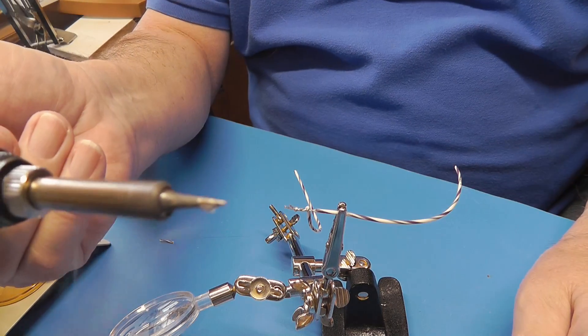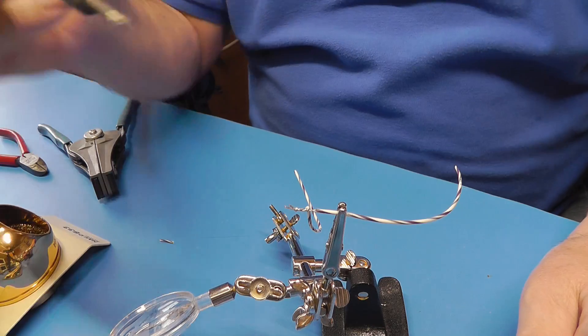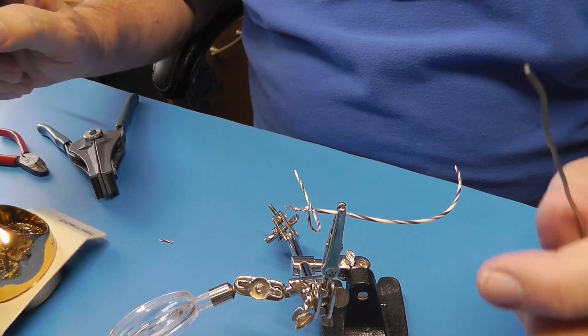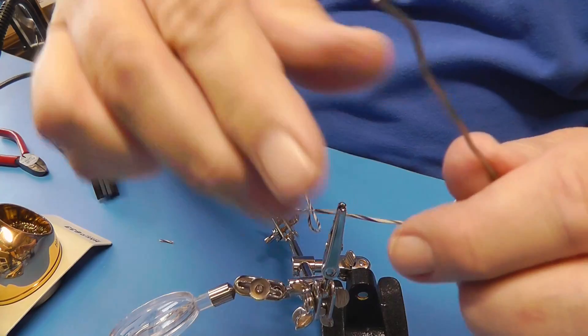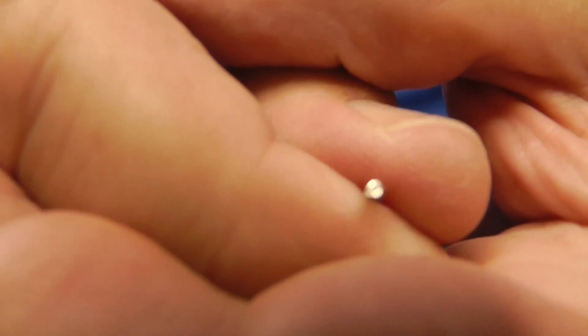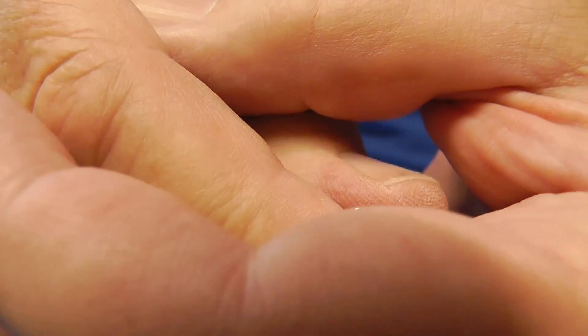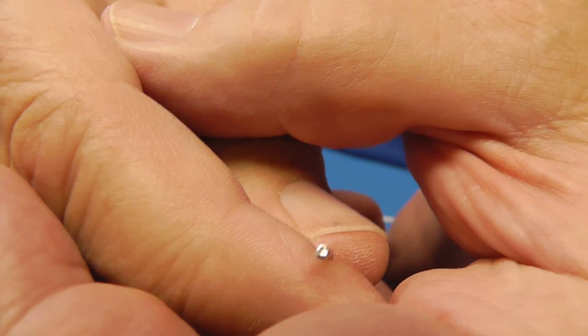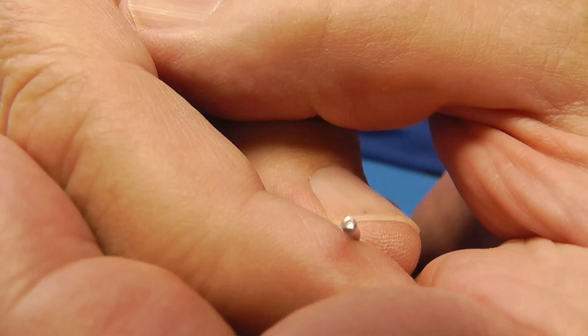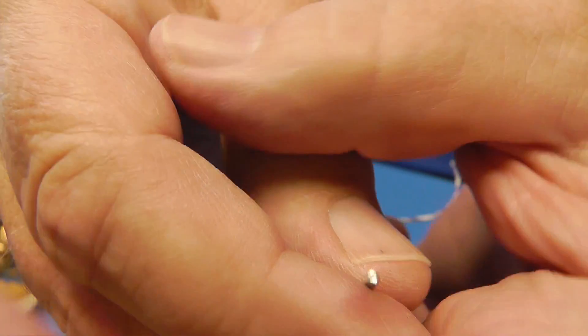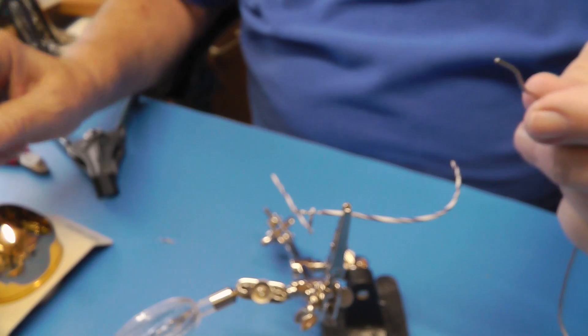Now that smoke you see is the rosin core of the solder. If you were able to look very carefully at the end of that, which I can't quite bring that into focus. You can see that there's a hole in the middle of it. And there's some rosin flux in there.